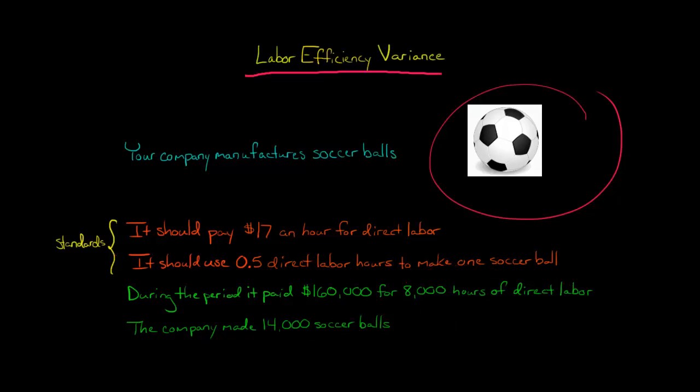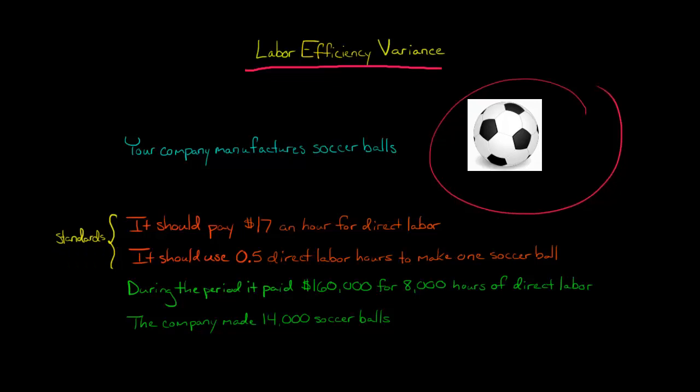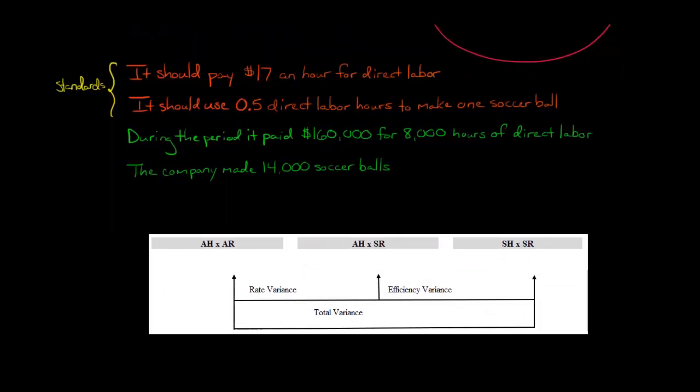So now we have enough information, we can calculate our labor efficiency variance. I like to set it up as follows. We've got actual hours times the standard rate and then the standard hours times the standard rate. And the difference between this and this is going to be our labor efficiency variance.